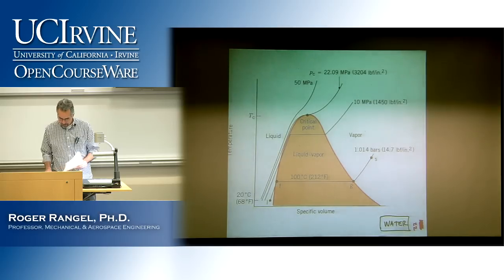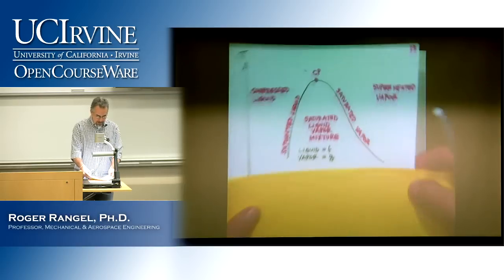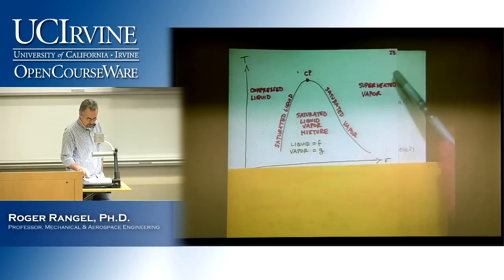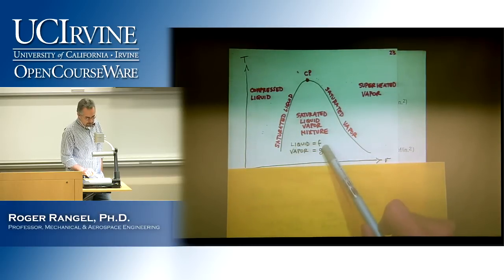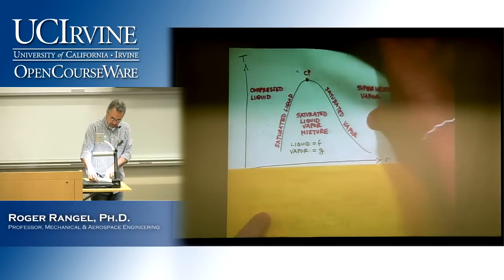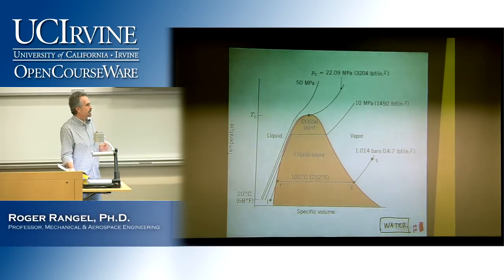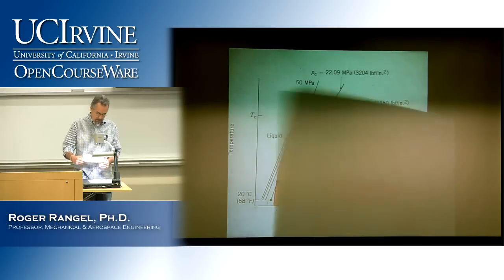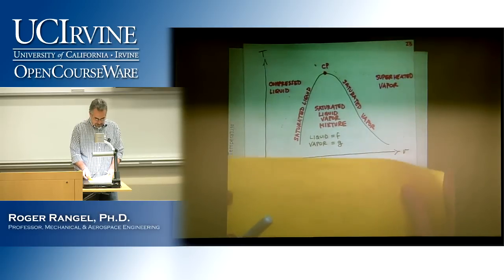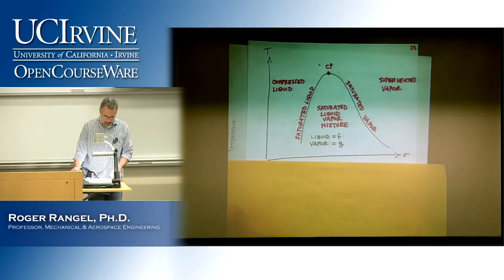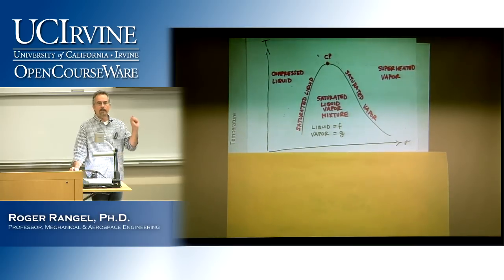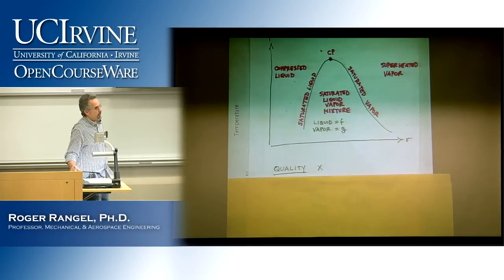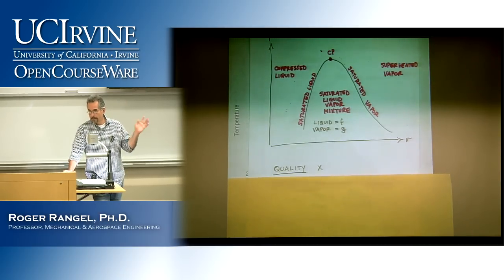To determine where I am, I need another piece of information, and that information is called quality. Quality in thermodynamics has a very specific meaning, different from everyday use. Quality, for which we use the symbol X, is simply the ratio of the mass of vapor to the total mass — where the total mass is the sum of the liquid mass and the vapor mass. If I am in a mixture of liquid and vapor and I know the quality, I know exactly where I am — whether I'm closer to F or closer to G.